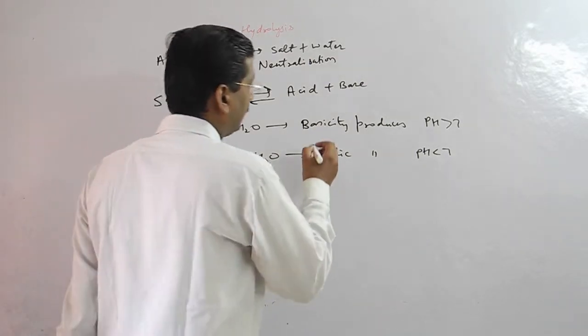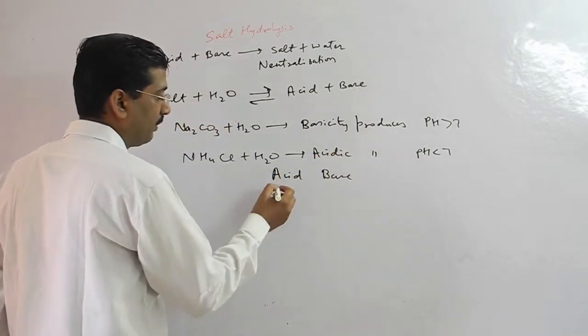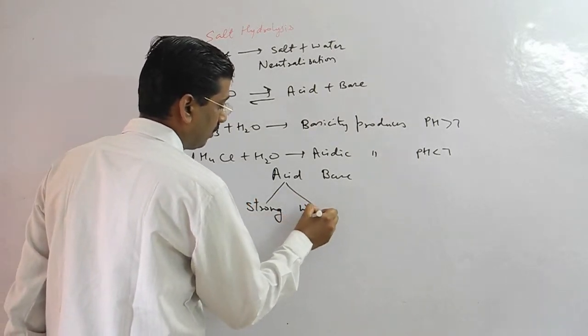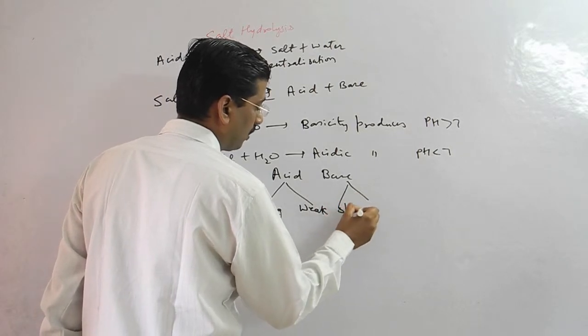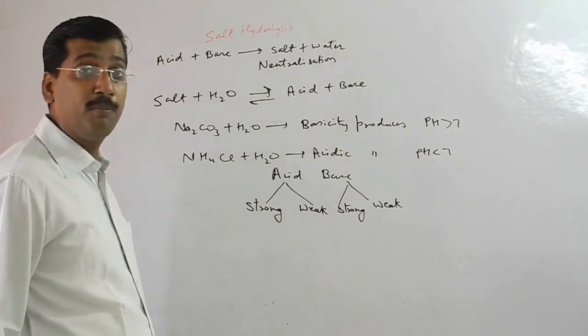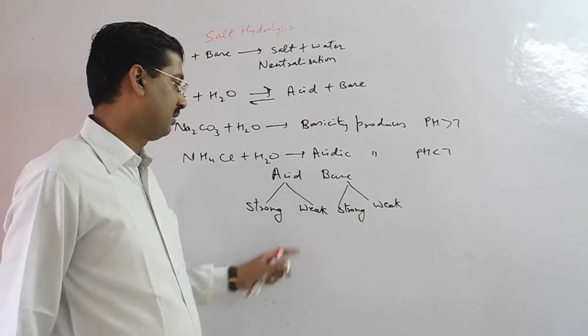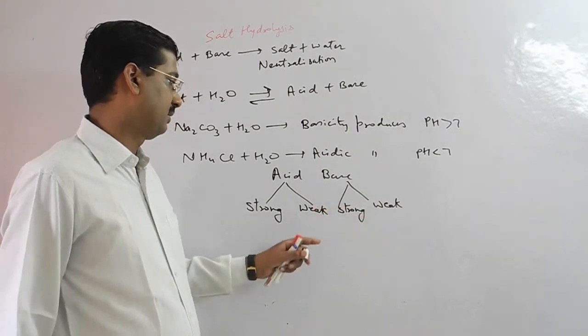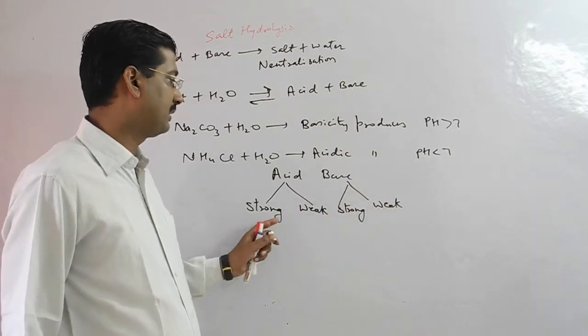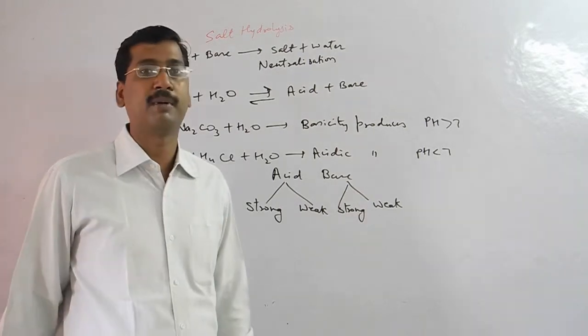In salt hydrolysis, acid and base have two combinations of strong and weak. So total you can have four combinations of salt. One is strong acid, strong base. Weak acid, strong base. Weak acid, weak base. Strong acid, weak base. So these are four combinations of salt hydrolysis we will discuss.